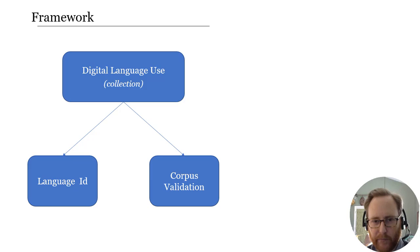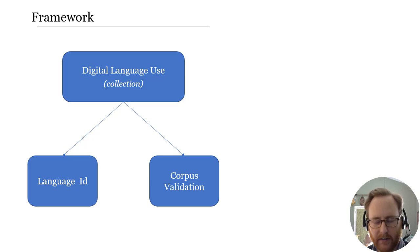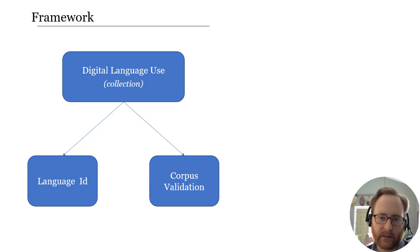The overall framework we're looking at is that we're collecting digital language use from various sources like the web or social media, and as we use that digital language use to put together a corpus, the two steps we need are: to identify what language it is, and to have automated measures of corpus validation so that we can know how consistent and stable a particular type of data is for a language, a register, or a dialect.